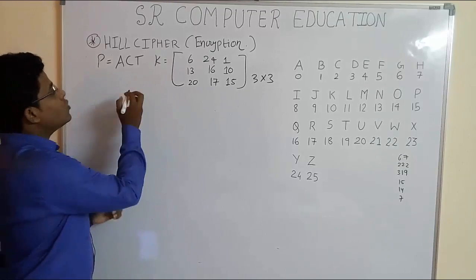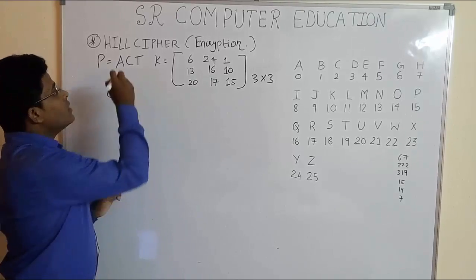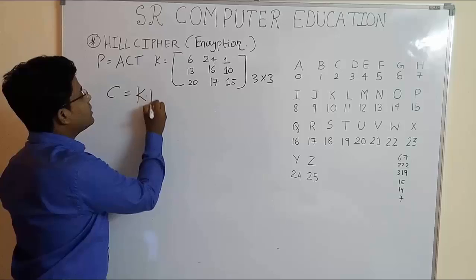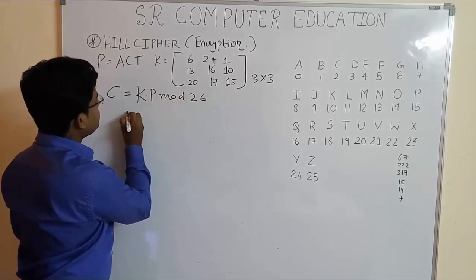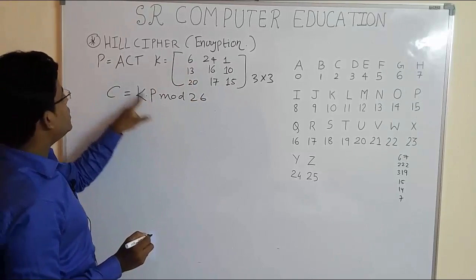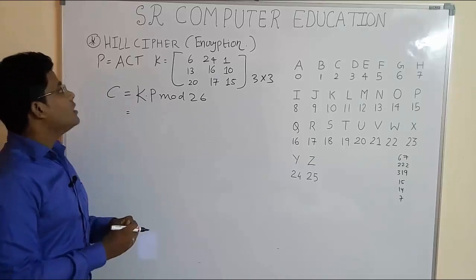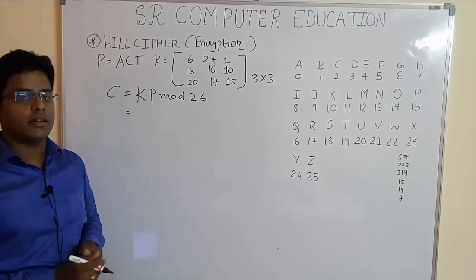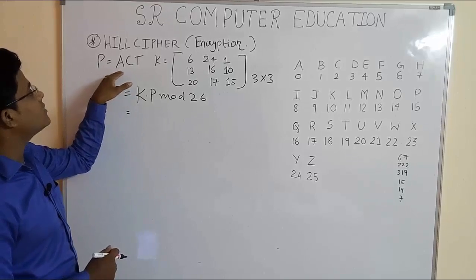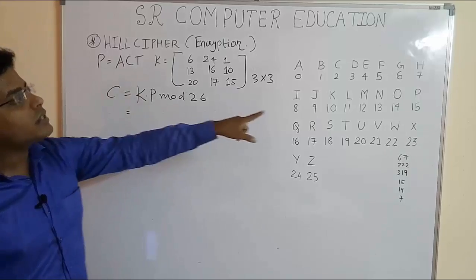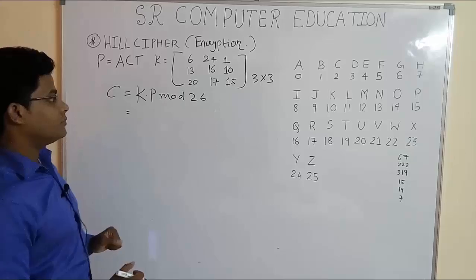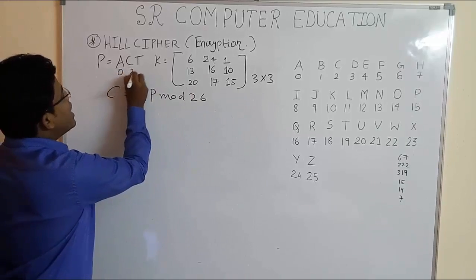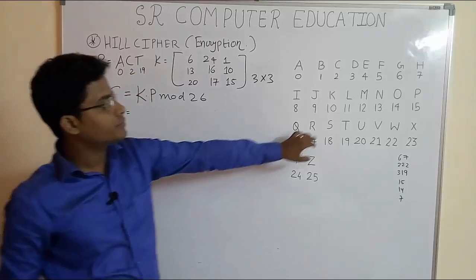From our previous videos we know the formula to find the ciphertext in Hill cipher: C = K × P mod 26, where K is the key matrix. The plaintext is ACT. Since the given matrix is 3×3, you have to make groups of three characters. The plaintext is already in three characters: ACT. The associated numbers are 0 for A, 2 for C, and 19 for T. You can see here.